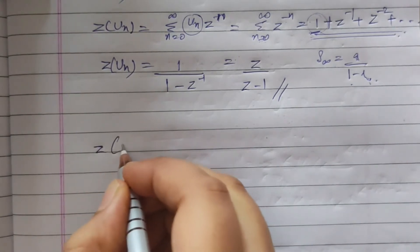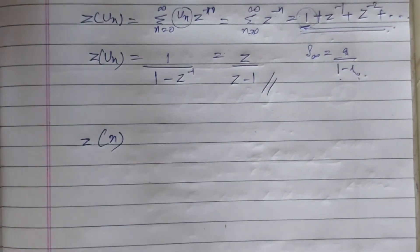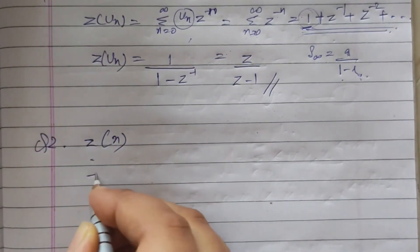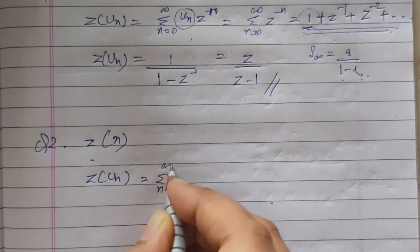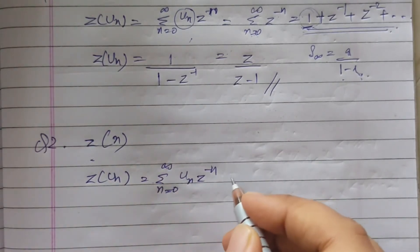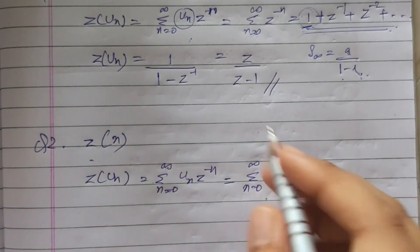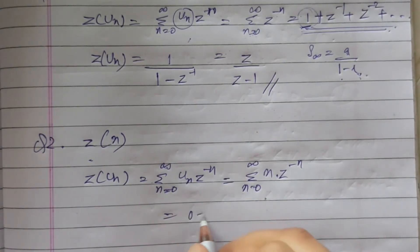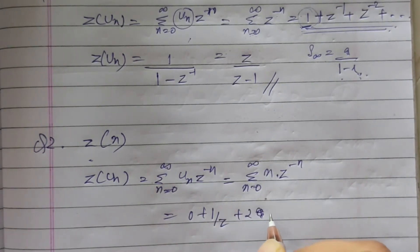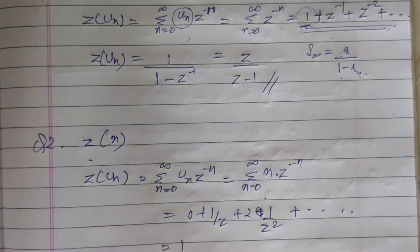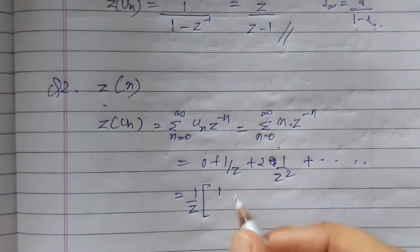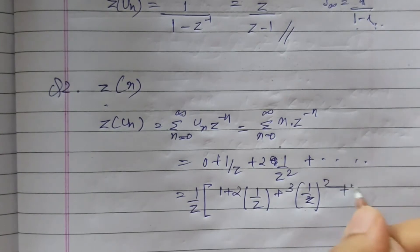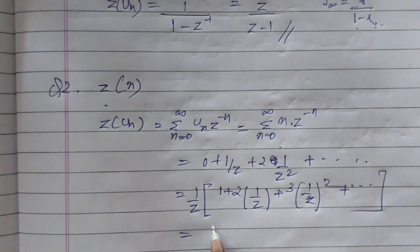Similarly, let's take another example: Z{n}. Using the same formula, Z{u(n)} = summation from n=0 to infinity of n * z^(-n). The series becomes 0 + 1/z + 2 * (1/z)^2 and so on, which gives 1 + 2*(1/z) + 3*(1/z)^2 and so forth.